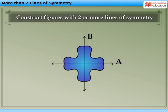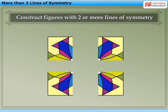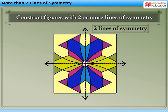We can also make such figures by joining similar parts. For example, arranging these four tiles as shown, we get this figure having two lines of symmetry.